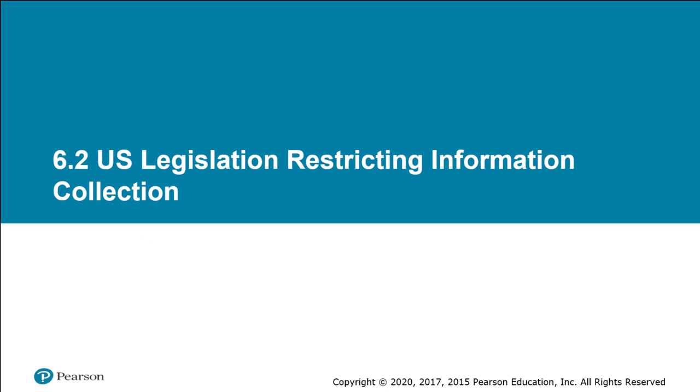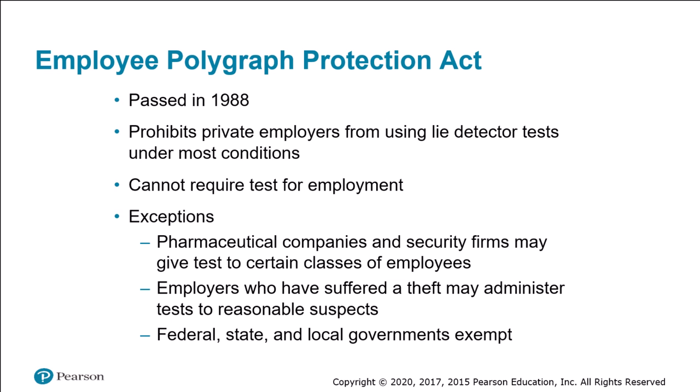In section 6.2, we're going to look at three examples of federal legislation that limit the amount of information private entities can collect from individuals. The Employee Polygraph Protection Act of 1988, or EPPA, prohibits most private employers from using lie detector tests. An employer may not require or even request a job applicant or employee to take a lie detector test, and an employee who refuses cannot suffer any retaliation.